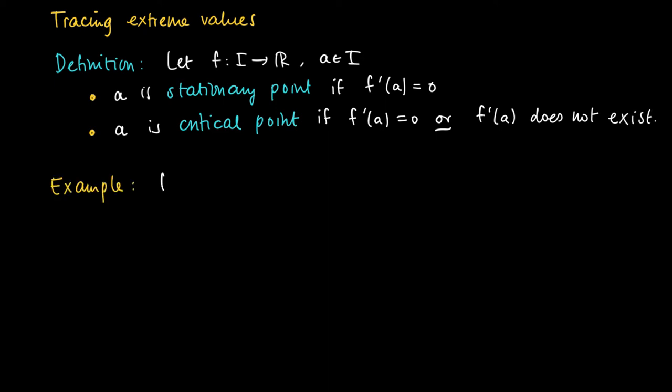There is an example focused on the quadratic function f(x) equals x squared. We find that the derivative is given by 2x. So solving for the stationary points gives a equals 0. So a equals 0 is a stationary point, and because it's stationary, it's also a critical point.